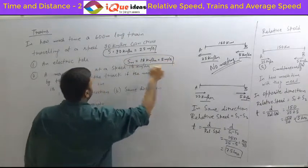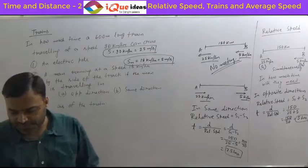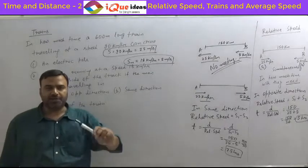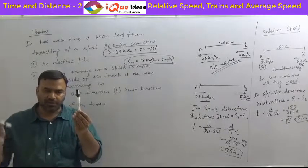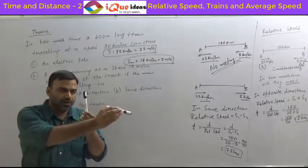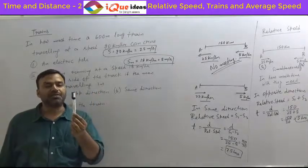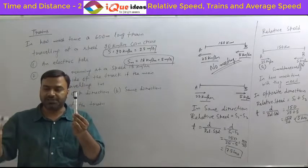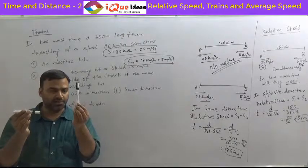For the electric pole, we don't require the man's speed. Let's first do the question of the electric pole. The pole doesn't move. The train comes — when the head of the train is just touching the electric pole, you start counting.